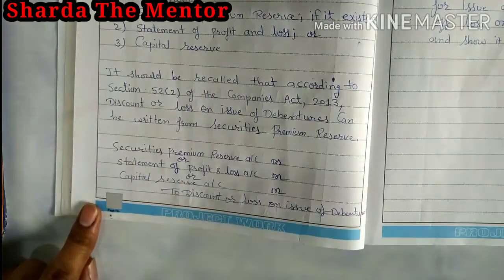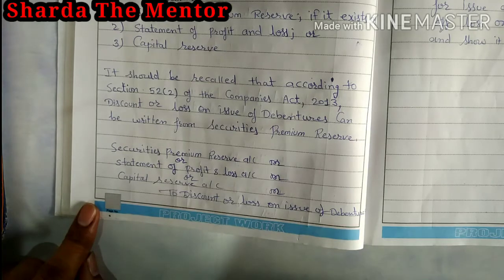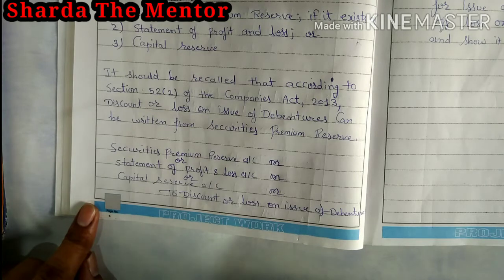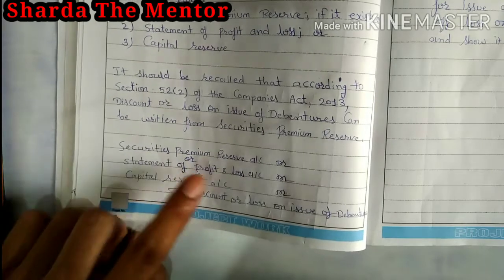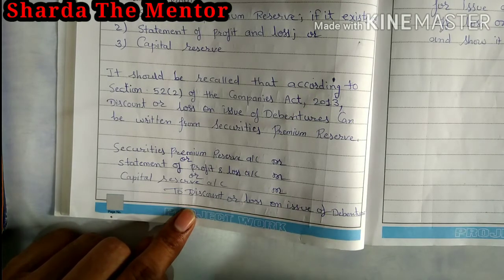Some important points to remember: according to Section 52, Sub-section 2 of the Companies Act 2013 — I am mentioning this because in objective-type questions they may ask about this section — so remember that Section 52(2) of the Companies Act 2013 states that discount or loss on issue can be written off from Security Premium Reserve. You can write off from security premium reserve, or statement of P&L, or capital reserve. It may also be possible that if the amount is higher, two sources are used together.